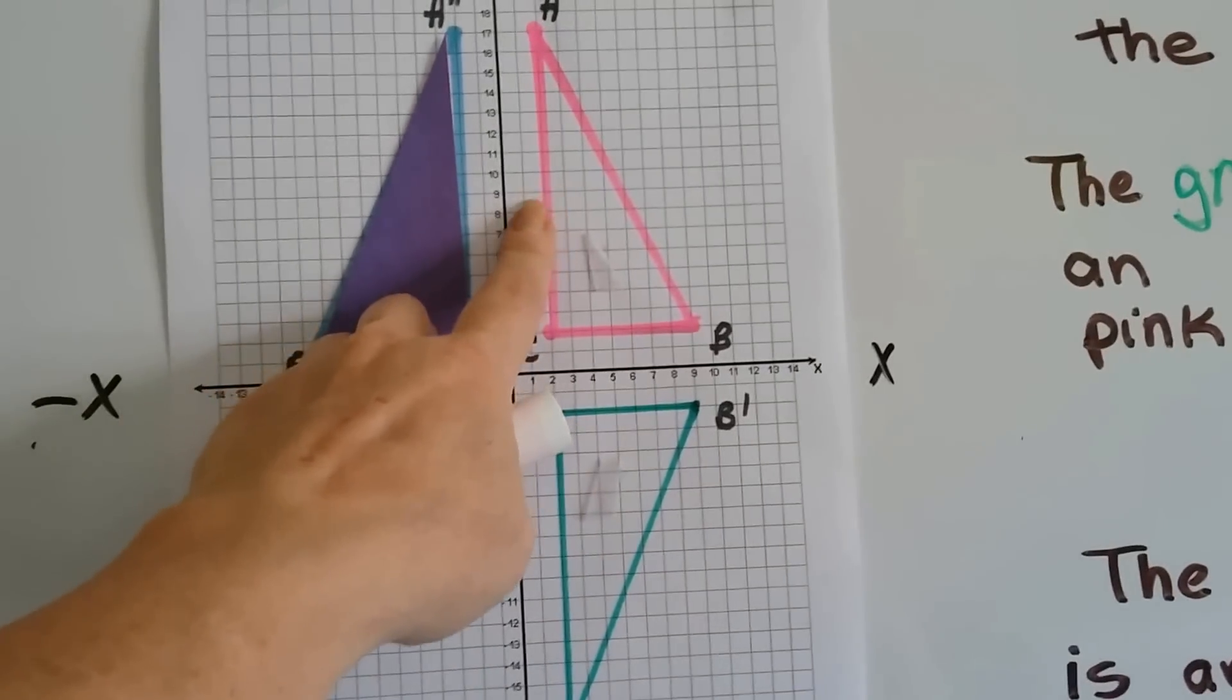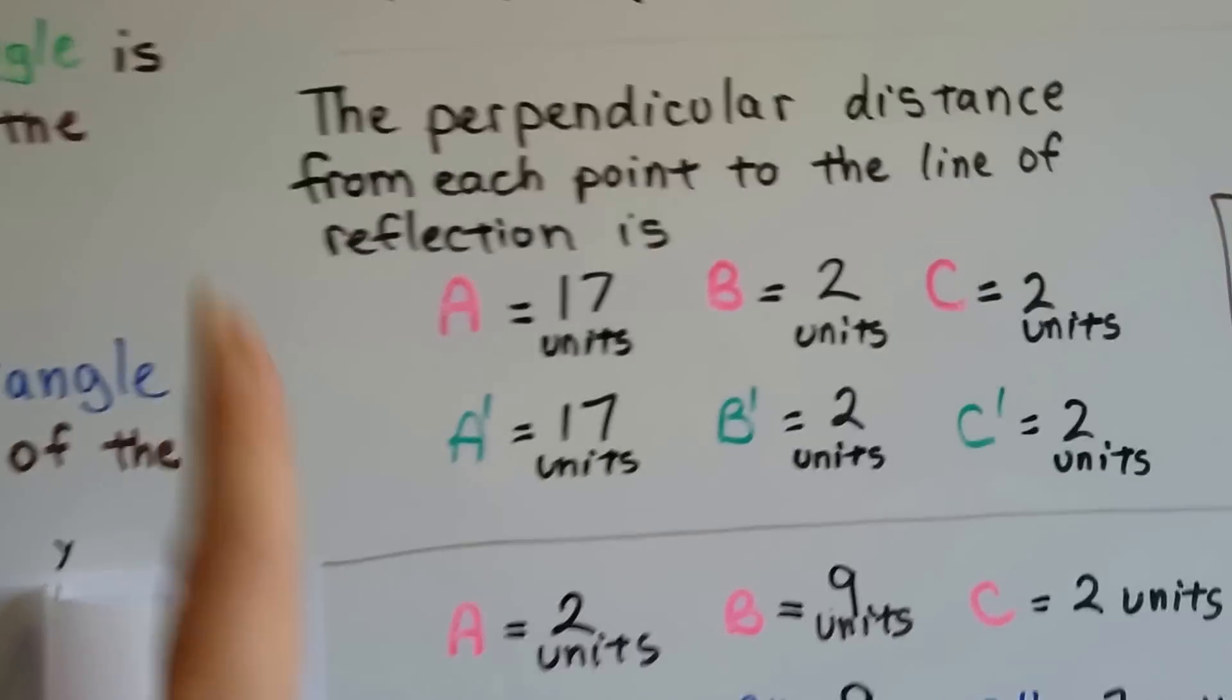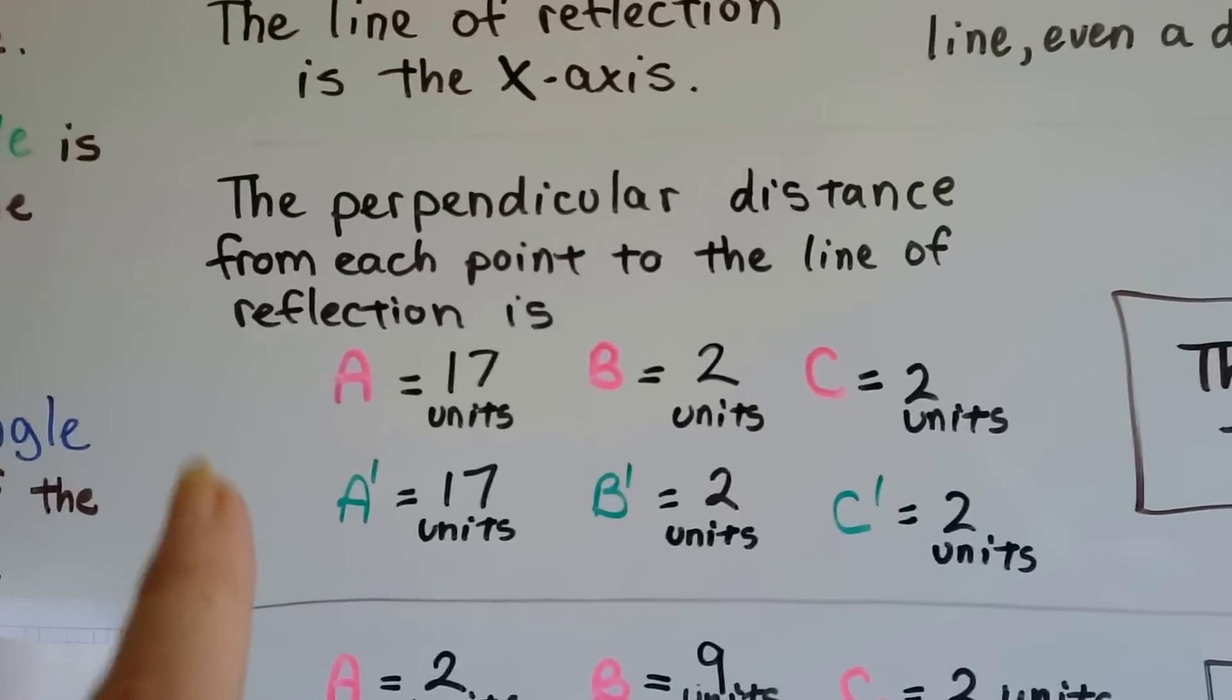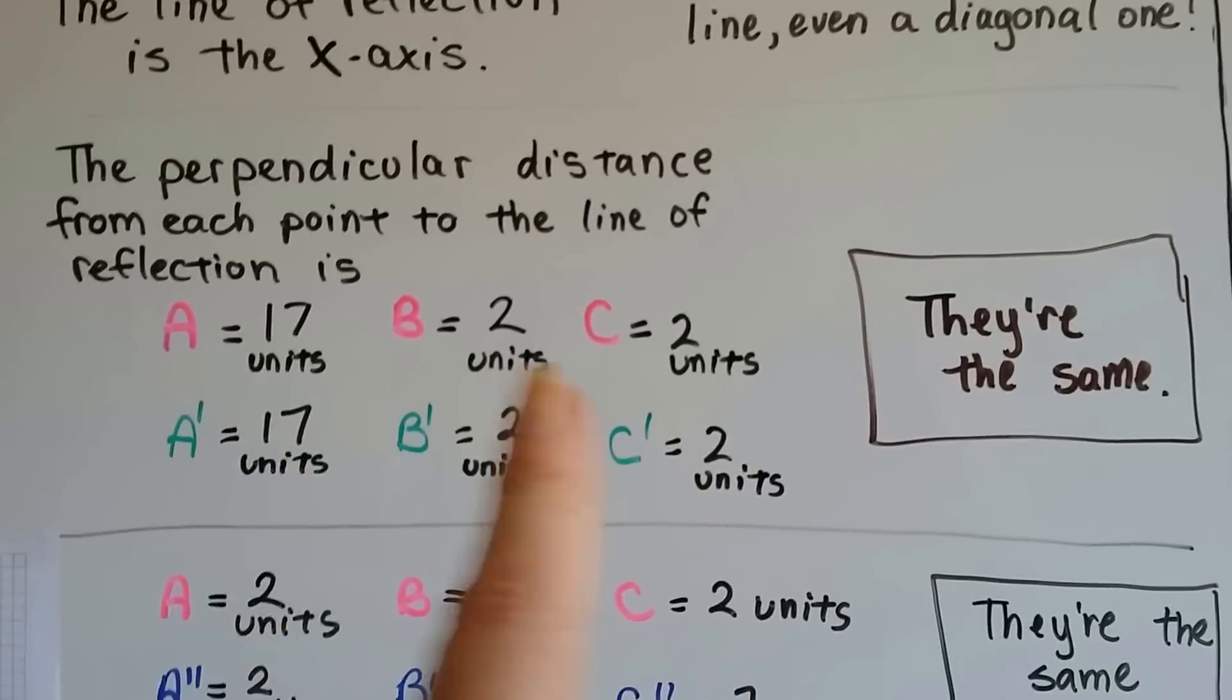And this is two squares away, and this is two squares away for this one. So the perpendicular distance from each point to the line of reflection is the same. They've got the same number of units.